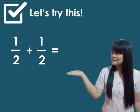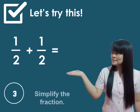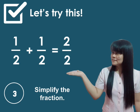Then step number 3. Simplify the fraction. Since it is 2 over 2, and 2 divided by 2 is 1, the answer will be 1.